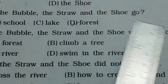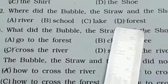Second. Where did the bubble, the straw and the shoe go? A. River, B. School, C. Lake, D. Forest. Correct answer is D, forest.